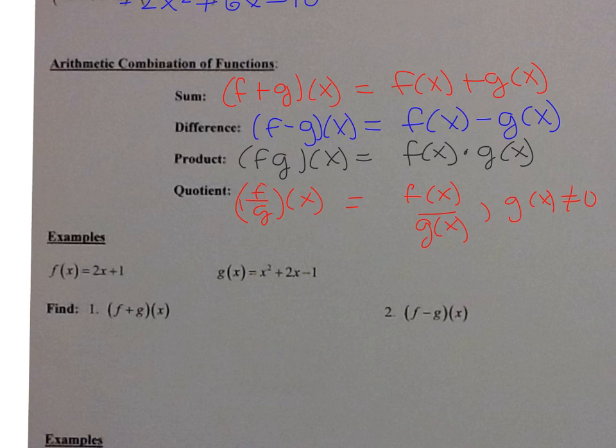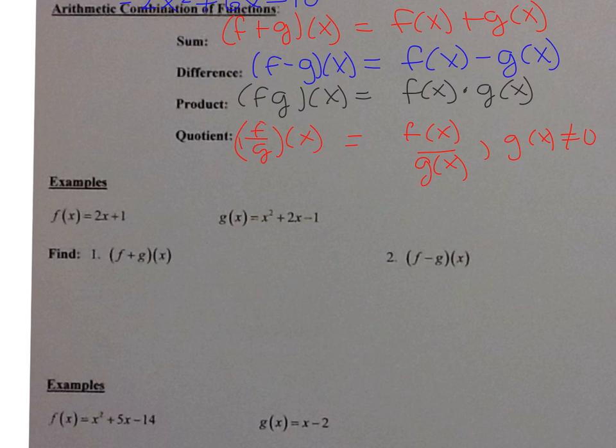Okay, so let's take a look at what we have here. I gave you two functions. f of x equals 2x plus 1 and g of x equals x squared plus 2x minus 1. And for the first one, I'm looking for f plus g of x. So I want to add them. So that's 2x plus 1 plus x squared plus 2x minus 1.